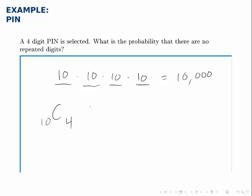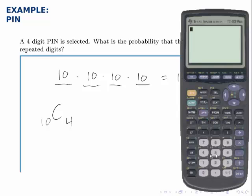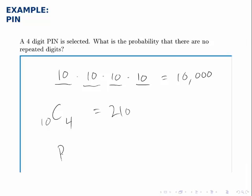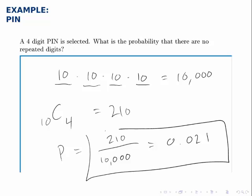So, the probability that happens randomly is the number of ways that can happen divided by the total number of possibilities for what can happen. 210 divided by 10,000, which as a decimal is 0.021, so about a 2% chance that no digits repeat.